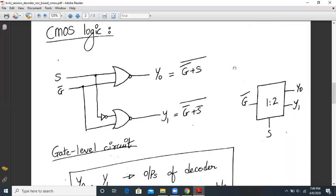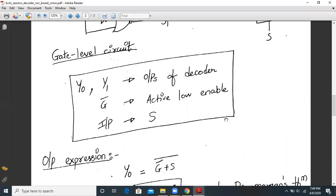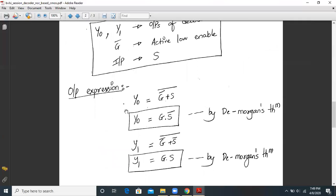Now let us see how we expand the output expression for our simplicity. Y0 is equal to G-bar plus S the whole bar can be further simplified as per De Morgan's theorem as G.S-bar. Similarly, Y1 can be further simplified as G-bar plus S-bar the whole bar as G.S again by De Morgan's theorem.